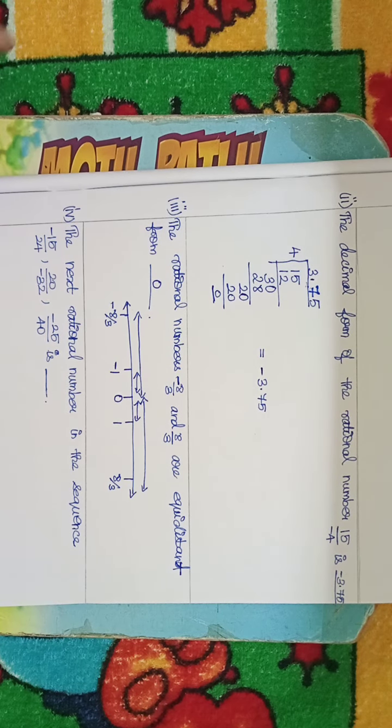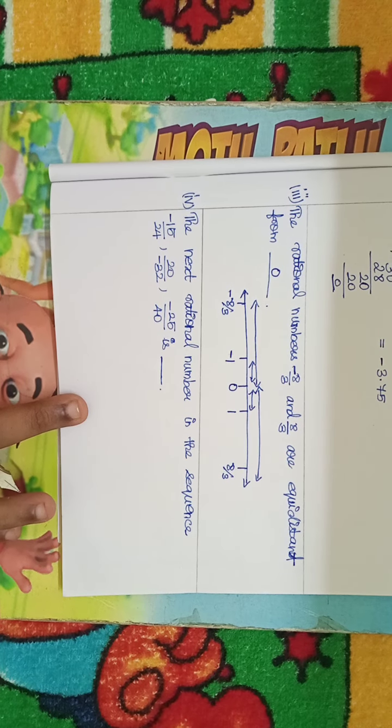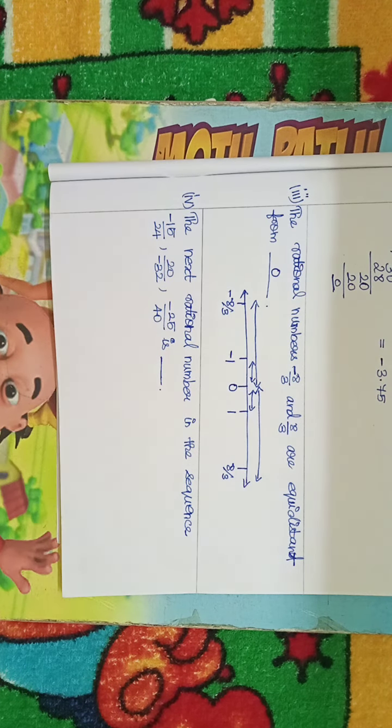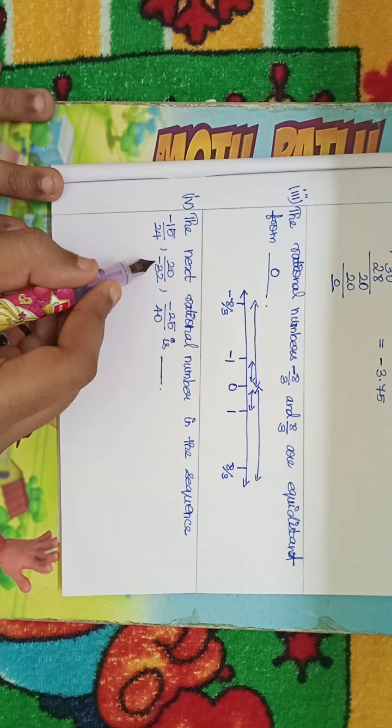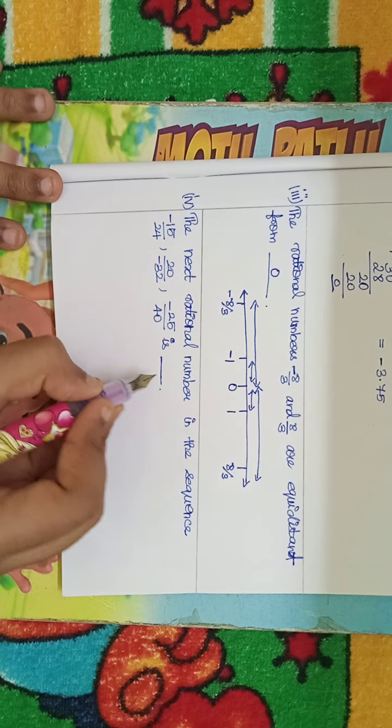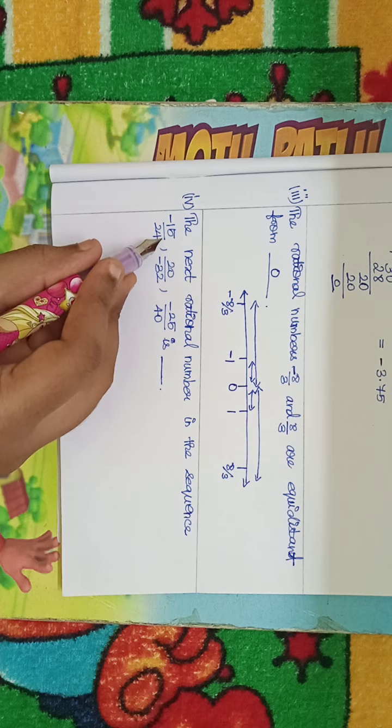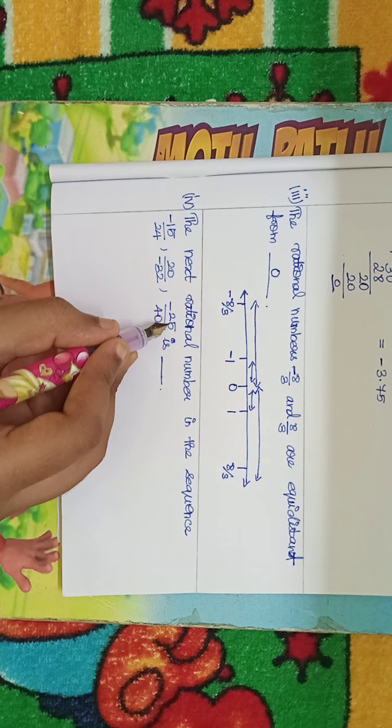Now, the fourth question. The next ratio number in the sequence minus 15 by 24, 20 by minus 32, minus 25 by 40 is dash. Now, if you look at the number: 5, 3, 15. 5, 4, 20. 5, 5, 25.